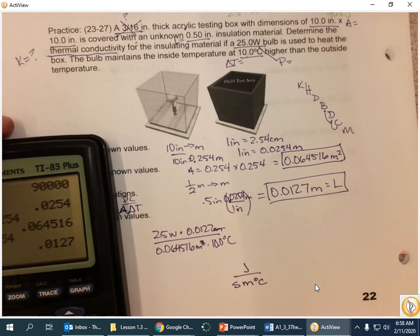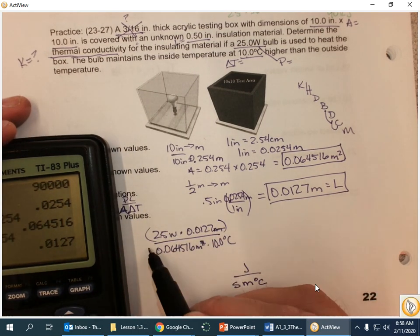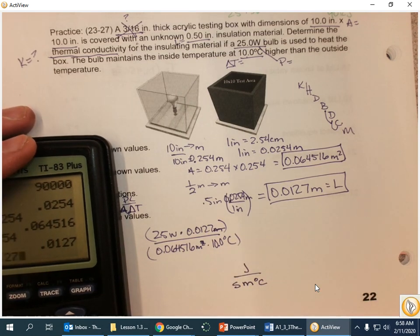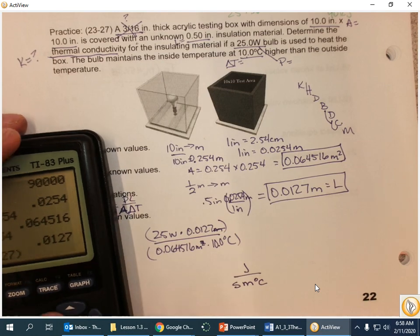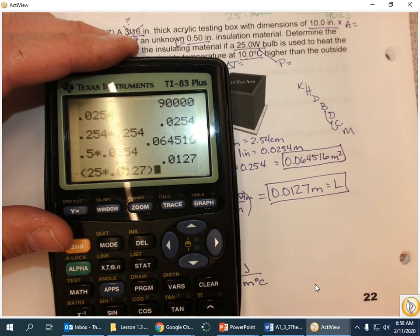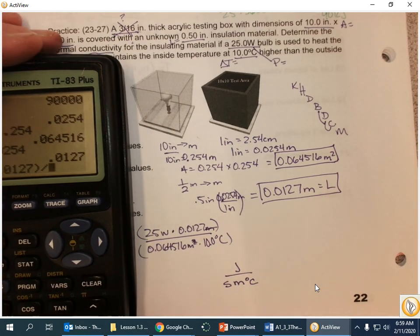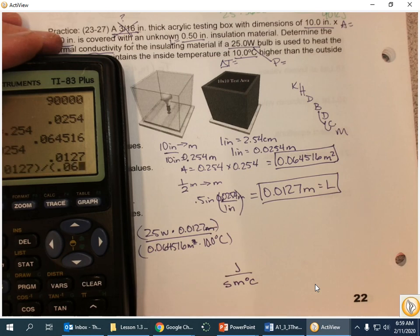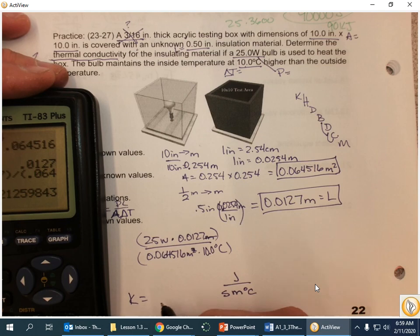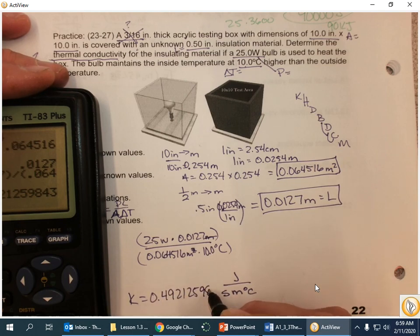Let's do it. So, I'm going to do parenthesis here and here. So, 25 times 0.0127, forgot the parenthesis. So, I'll insert one there, and divide that by parenthesis 0.064516 times 10. And that gives me my answer. So, K is 0.492.